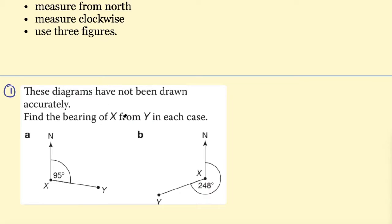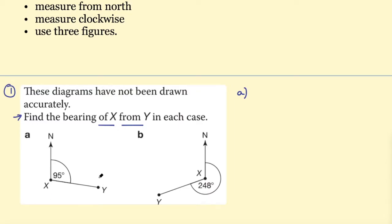Question one says: these diagrams have not been drawn accurately — find the bearings of X from Y in each case. This is a key point: questions about bearings are often framed as 'the bearing of X from Y.' If it says 'from Y,' that means we're traveling away from Y towards X. In this diagram, Y has a bearing of 95 degrees shown, and we want to find the bearing of X from Y.